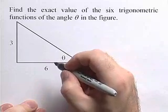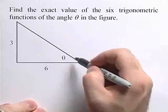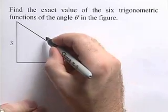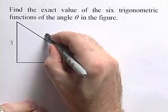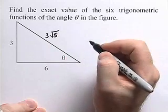We can use the Pythagorean theorem to find the length of the hypotenuse. If we do that, we'll find that the hypotenuse has length 3 times the square root of 5.